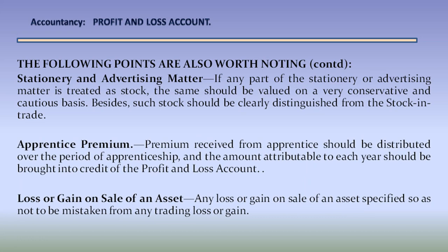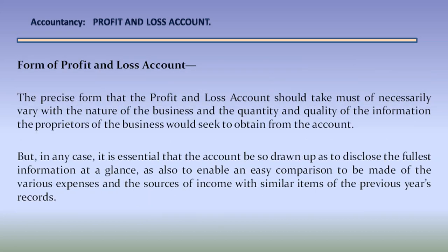Apprentice premium: premium received from an apprentice should be distributed over the period of apprenticeship, and the amount attributable to each year should be brought into the credit of the profit and loss account. Loss or gain on sale of an asset: any loss or gain on sale of an asset should be specified so as not to be mistaken for any trading loss or gain.